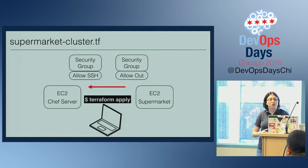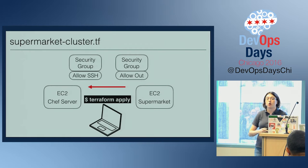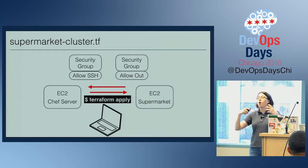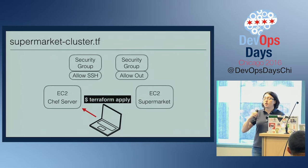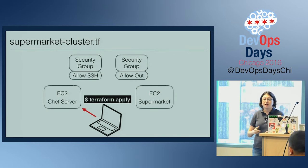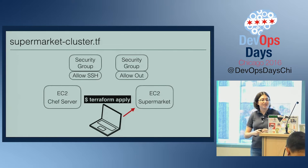Next, it configures supermarket to use that Chef server for authentication and authorization, then configures the Chef server to be aware of the supermarket server. Finally, it configures the user's workstation to use the newly spun up Chef server and supermarket. And that's the end of the config.